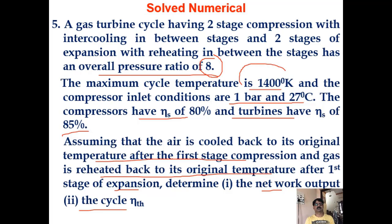The maximum cycle temperature is 1400 K and the compressor inlet conditions are 1 bar and 27 degrees Celsius. The efficiencies of the compressors are 80% and turbines are 85%. Assuming that the air is cooled back to its original temperature after first stage compression — that is perfect intercooling — and the gas is reheated back to its original temperature after the first stage expansion — that is perfect reheat — determine the net work output and the cycle efficiency.